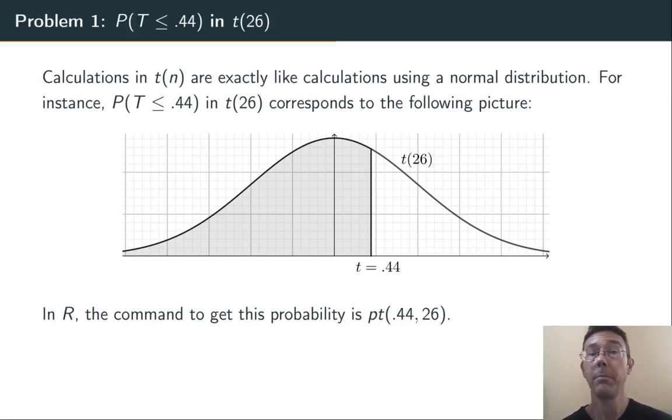Visually, it means we graph a bell curve. The t-distributions all have roughly bell shapes. We label the t-score we're interested in, here 0.44, and we shade the area to the left of that t-score. The probability is going to be that shaded area.